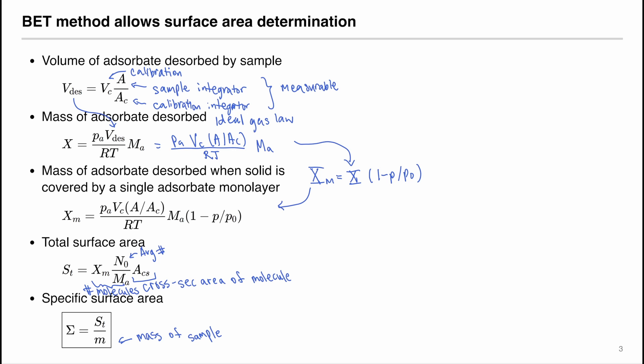In this experiment, the instrument will calculate S of t for us, so this is a measured value. You can also see that the integrator things will also be taken into account by the instrument. What we need to know is the mass of the sample that we want to measure before we put in the instrument. And we can then calculate the specific surface area.